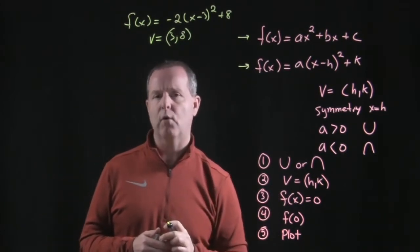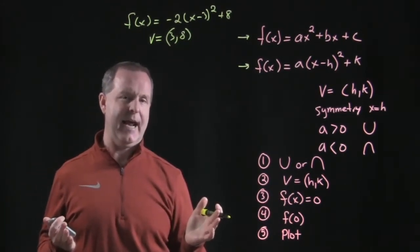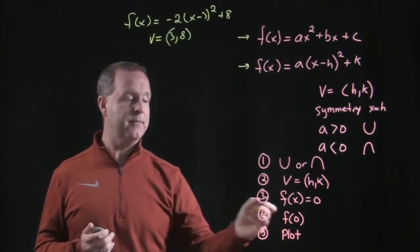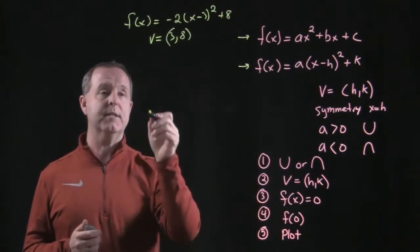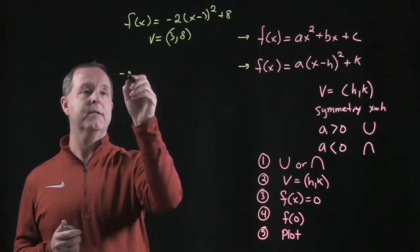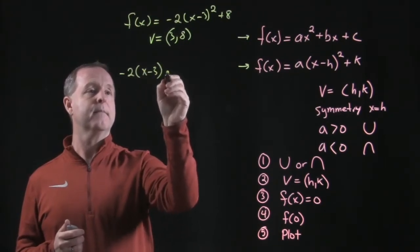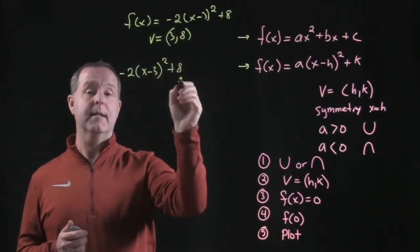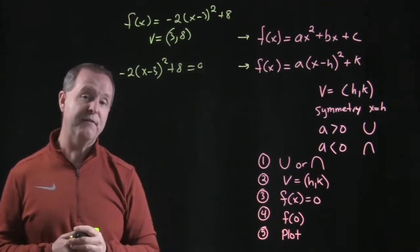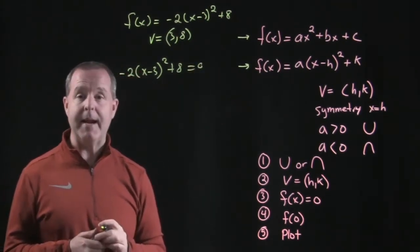Step three, I want to look for where does it cross the x-axis at? And how do we solve that? Well, let's set the function equal to zero. So minus 2(x minus 3) squared plus 8, let's set that equal to zero and find out for what values of x does that make it the case?